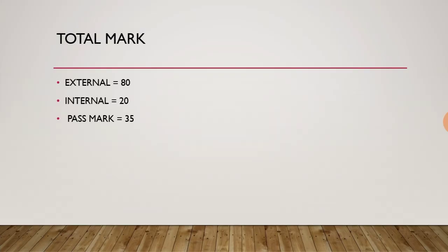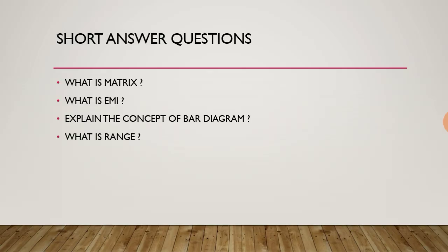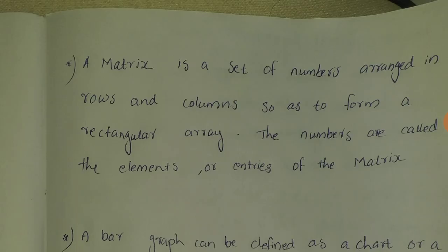Now let's look at the questions. First, what are the short answer questions? What is a matrix? The matrix is a set of numbers arranged in rows and columns so as to form a rectangular array. The numbers are called the elements or entries of the matrix.